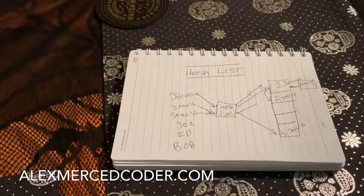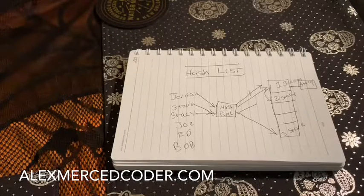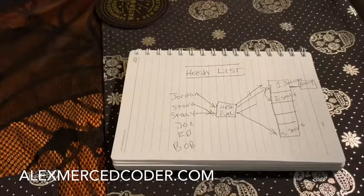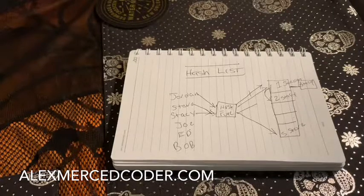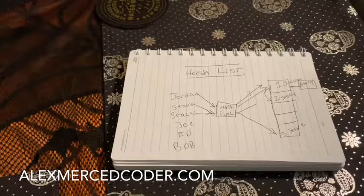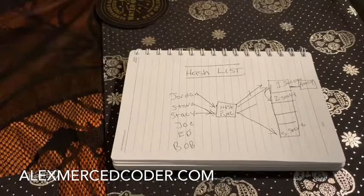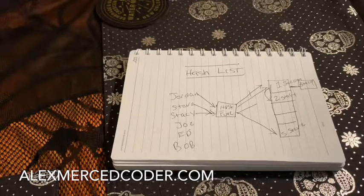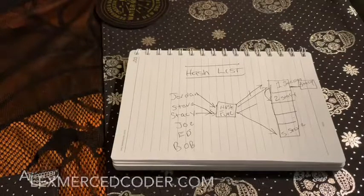That's how a hash list works. You have inputs — keys — that go into a hashing function that outputs an integer labeling your spot on the list, and collisions are handled through either probing or chaining. My name is Alex Merced from alexmercedcoder.com. Thank you very much, have a great day. Bye-bye.